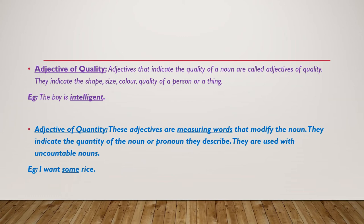Adjective of quantity: these adjectives are measuring words that modify the noun. They indicate the quantity of the noun or pronoun they describe and are used with uncountable nouns. The most important thing to learn is that the adjective of quantity is used with uncountable nouns because we cannot count them but we can measure them. If you remember, we studied countable and uncountable nouns in a previous class. For example: I want some rice — not one rice or two rice, but some rice, more rice, much rice, enough rice, etc.